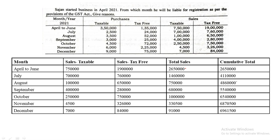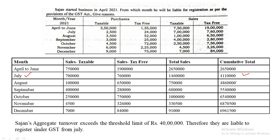Cumulative totals: 26.5 lakh, then 41.1 lakh in July. Since the threshold limit for other states dealing in goods only is 40 lakhs, the cumulative turnover exceeds 40 lakhs in the month of July. Therefore, Sergeant's aggregate turnover has exceeded the threshold limit of 40 lakhs, and they are liable to register under GST from the month of July. These are the two types of sums usually asked from the exam point of view under GST.